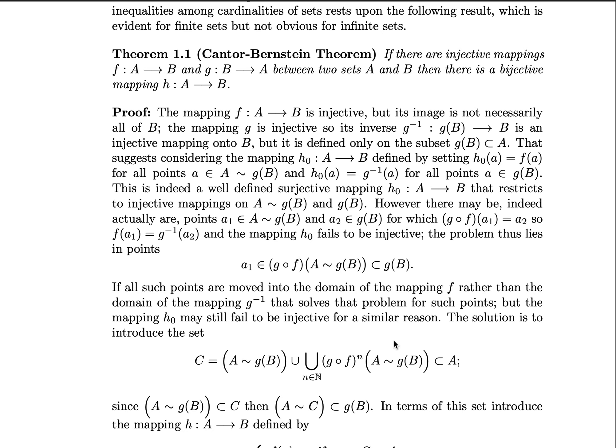That suggests that we consider the mapping h₀ from A to B, which is defined by setting h₀(a) equal to f(a) for every element a within A, but not inside the image of B under g.